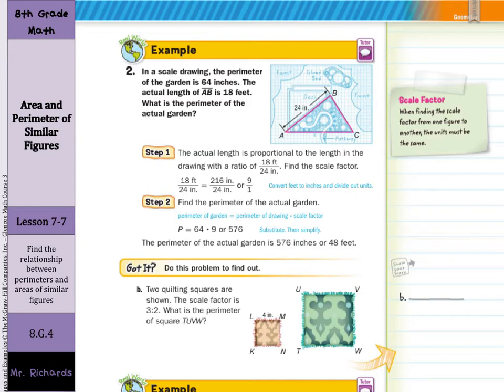Now let's try this on our own. Two quilting squares are shown. The scale factor is 3 to 2. What is the perimeter of square TUVW? Well, first we need to find the perimeter of LMNK. And all the sides are 4, so the perimeter of this is 4 times 4, which is 16. Then, if our scale factor is 3 over 2, what we can do is say the new perimeter, we'll just call it x, is going to equal that scale factor of 3 over 2 times 16. And that 16 can be written as 16 over 1. So when I cross-simplify here, I get 1 and 8. And lastly, x equals 24 inches. And that's my answer for question B, 24 inches.